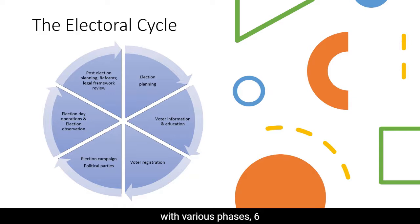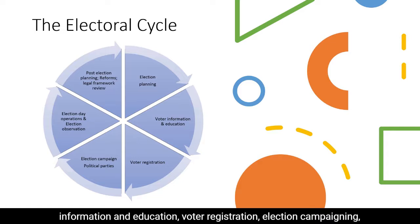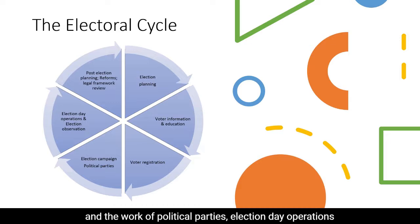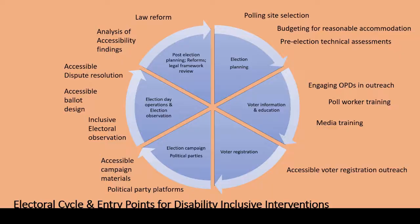This slide depicts the electoral process as a cycle with six phases. These phases include election planning, voter information and education, voter registration, election campaigning and the work of political parties, election day operations and election observation, and then post-election planning, reform, and legal framework review. The cycle is clearly one that continues.